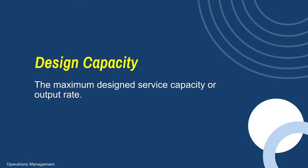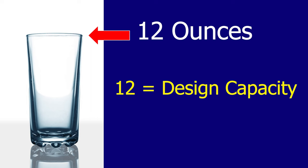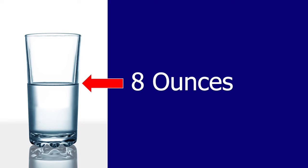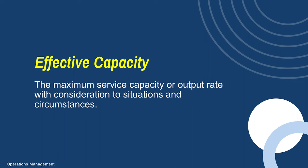We're going to look at capacity from a different aspect. Metaphorically, design capacity is the maximum amount achievable — this is the amount of capacity that your system or process is designed to achieve. Let's say we took this glass: it is designed to hold 12 ounces of liquid. That is the design capacity. However, if I only pour eight ounces into the glass, that would be the actual output — that is how much I'm actually using.